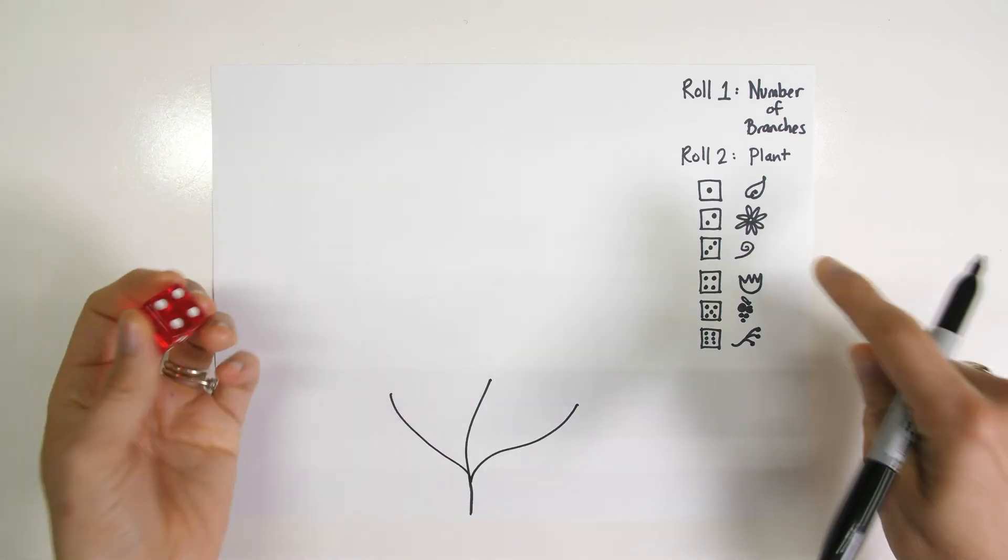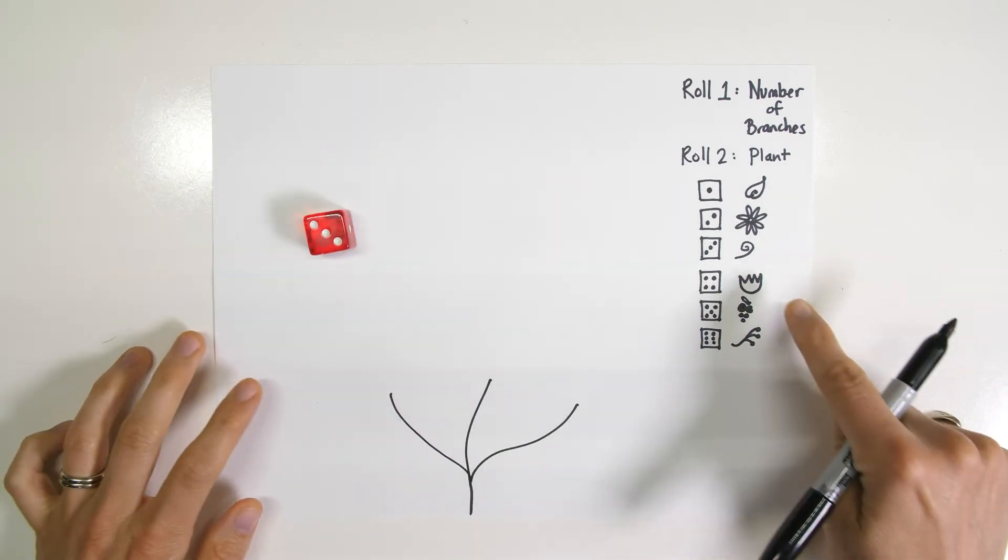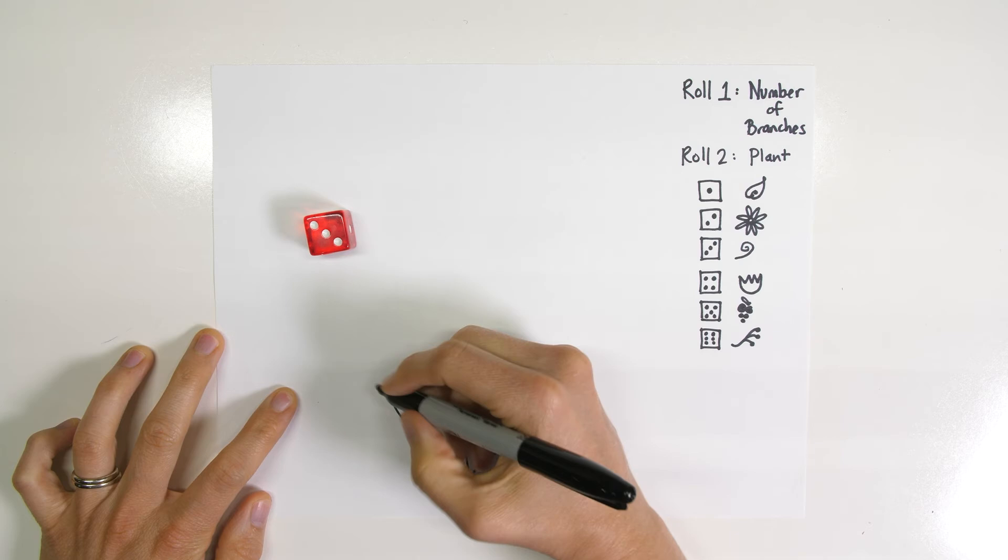And now I'm going to roll to see what to draw on each one of those. So I'm going to draw the little spiral on each one.